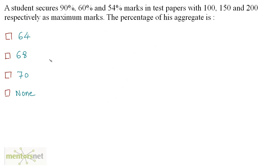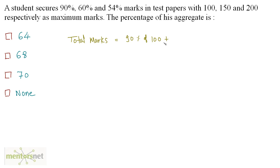A student secures 90%, 60%, and 54% marks in test papers with 100, 150, and 200 respectively as the maximum marks. The percentage of his aggregate is to be found. The total marks secured by the student will be equal to 90% of 100 plus 60% of 150 plus 54% of 200.